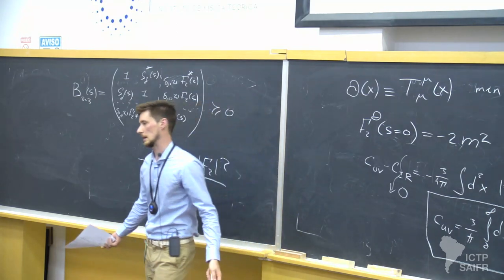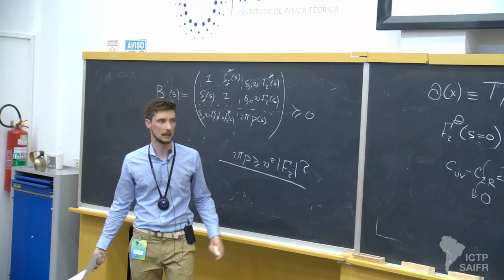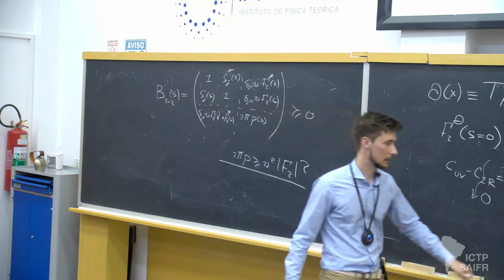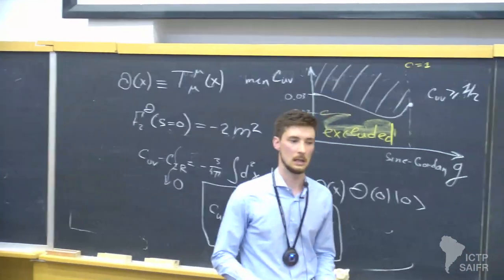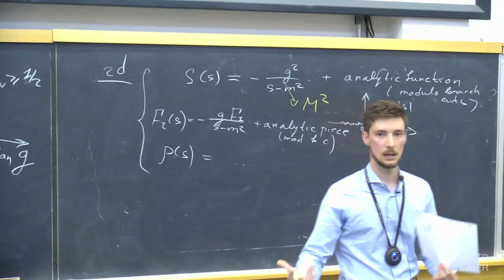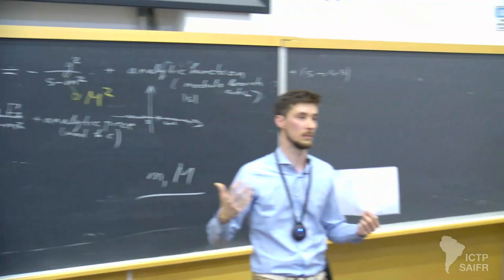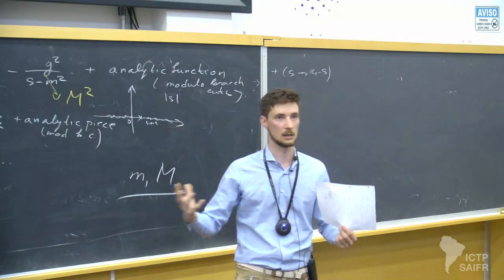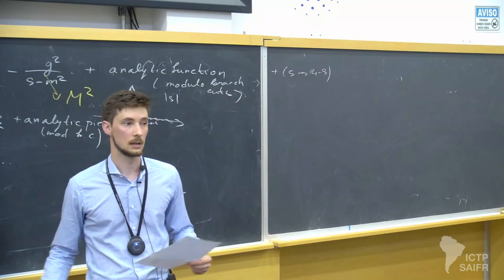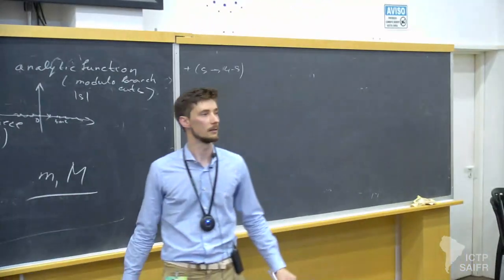It has to be, because Watson's equations are built into this setup. So I'm done — what we did is to consider a mixed setup where we have correlation functions and asymptotic states. We constructed a matrix which should be semi-positive definite. This is a nice, powerful constraint. We studied various applications and consequences of these constraints. Thank you very much.